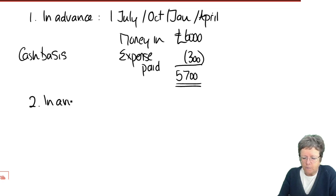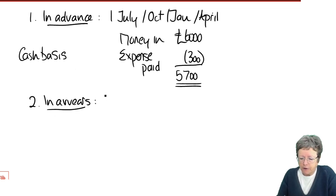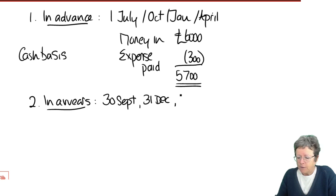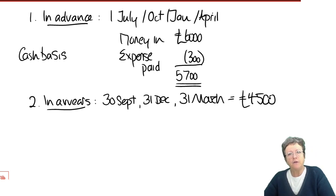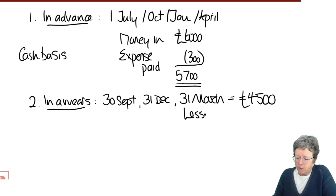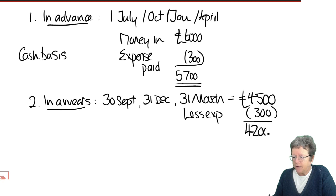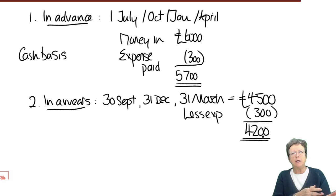In arrears, that would have been received on the 30th of September, 31st of December, and the 31st of March. So actually, in that situation, that's only the amount received in this tax year 2022-23 — £4,500. And again, you can only have the expenses that were paid, so the figure of £4,200 would then transfer to the income tax computation covered in Chapter 2. That would be your non-savings income.